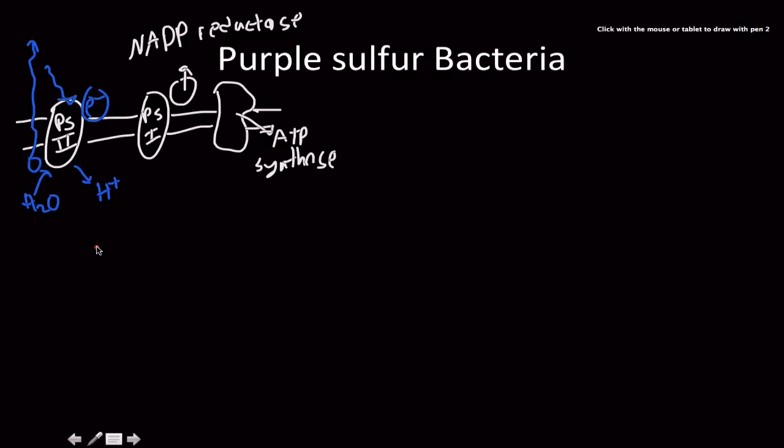In the instance of purple sulfur bacteria, though, instead of using H2O, they can use H2S for that exact same thing. It can donate an electron to that, and it will give it hydrogen protons and sulfur out here into the medium. And so that's one of the things that purple sulfur bacteria do, because oxygen and sulfur are both electronegative elements.